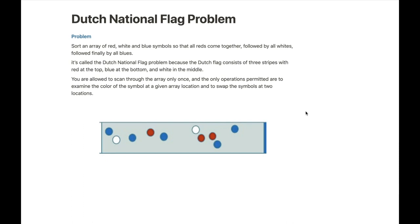The specificity of this problem is the constraint that we are allowed to scan through the array only once, which essentially means we have to solve this in O(n) time complexity. The only operations we can use are checking the color of a pebble — checking the value at each location only once — and swapping the symbols at two locations. We want to solve this in O(n) time and O(1) space, meaning in-place with only one pass through the array.